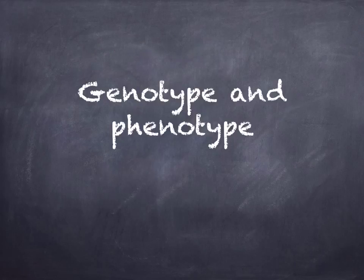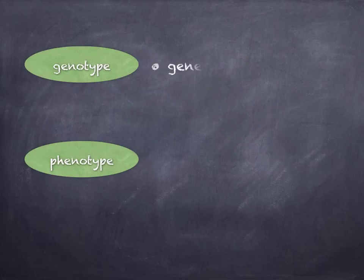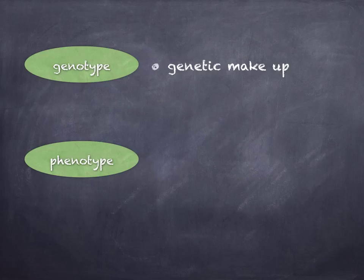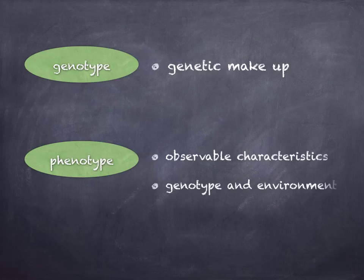So what's the difference between genotype and phenotype? Your genotype is the genetic makeup of an organism — it describes all the alleles that an organism contains. The phenotype is the observable characteristics of an organism, and it's the result of the interaction between the genotype and the environment, which can modify an organism's appearance. So genotype: genetic makeup. Phenotype: observable characteristics.